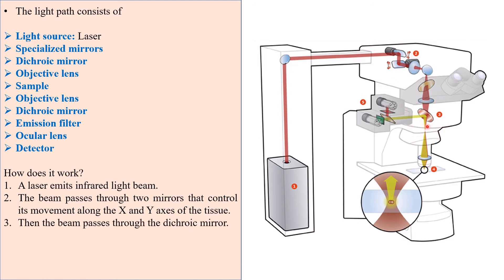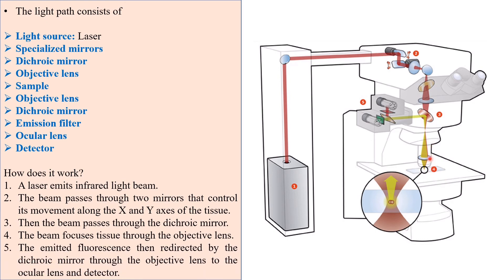Then the beam passes through the dichroic mirror. The beam focuses on tissue through the objective lens. The emitted fluorescence is then redirected by the dichroic mirror through the objective lens to the ocular lens and detector.